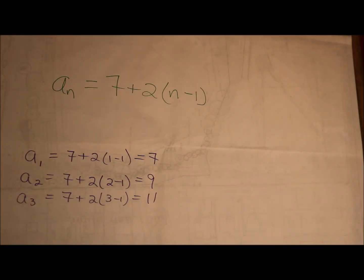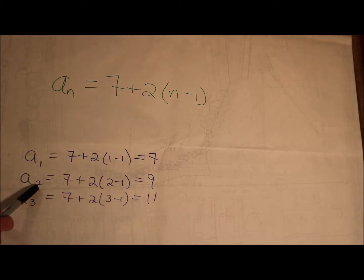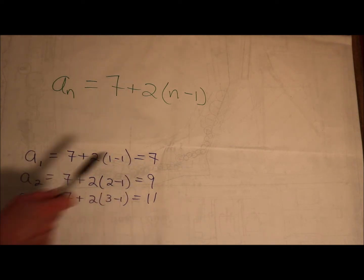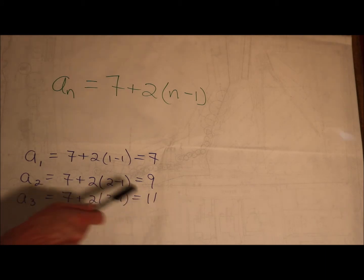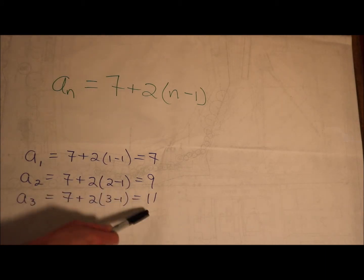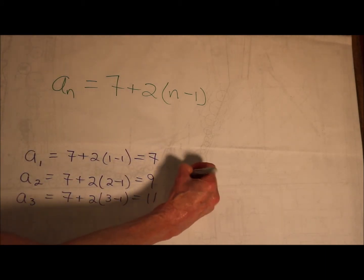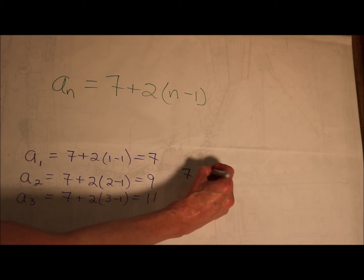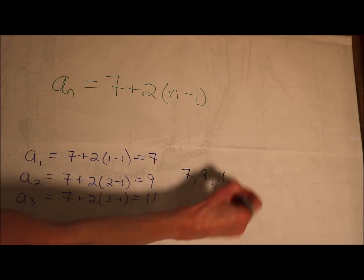Here's an explicit equation. I plugged in 1 to get the first term, plugged in 2 for n to get the second term, and plugged in 3 for n to get the third term. So I have a sequence: 7, 9, 11.